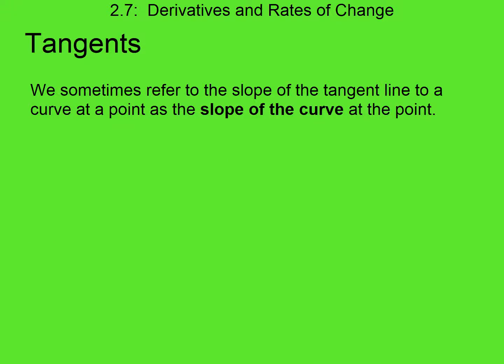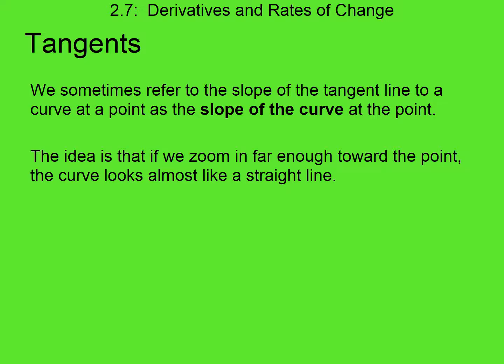We sometimes refer to the slope of the tangent line to a curve at a point as the slope of the curve at that point. As strange as that sounds — a curve doesn't have a slope, lines have slopes — we can talk about the slope of a curve if we define what we mean. The idea is that if we zoom in far enough toward the point, the curve looks almost like a straight line.